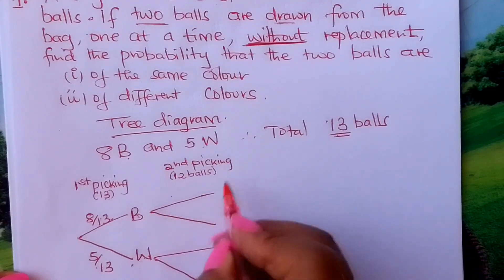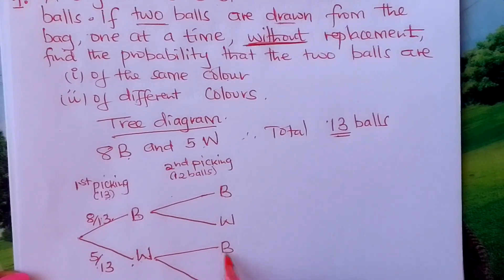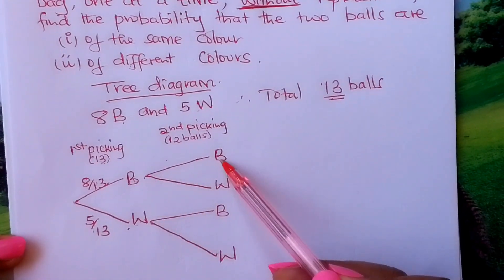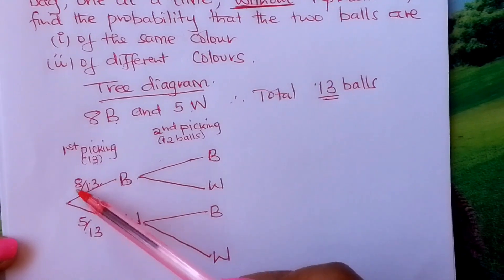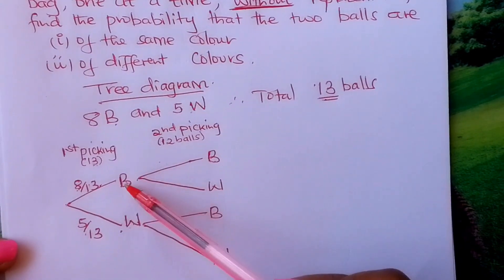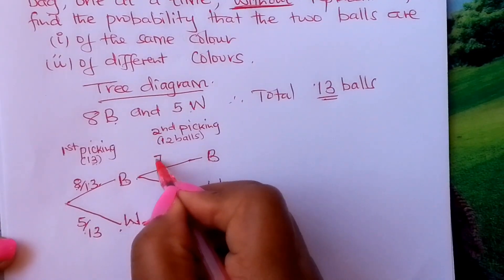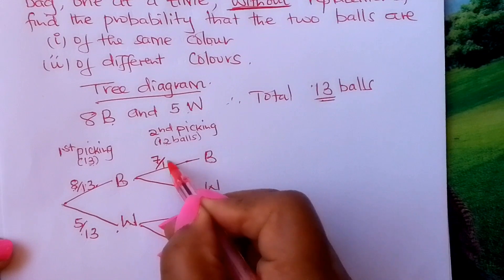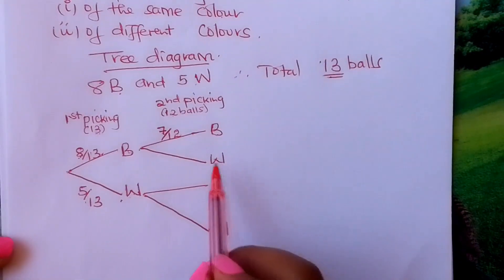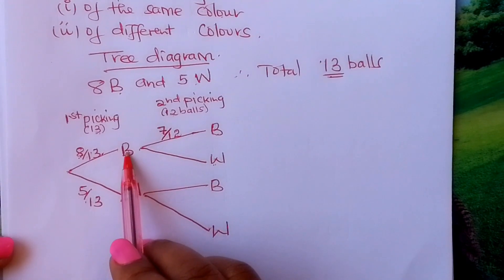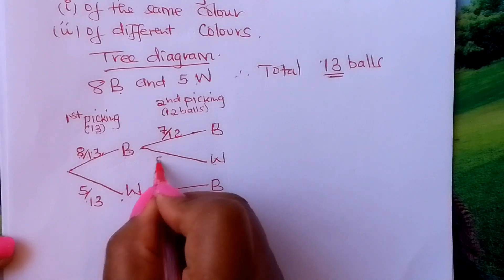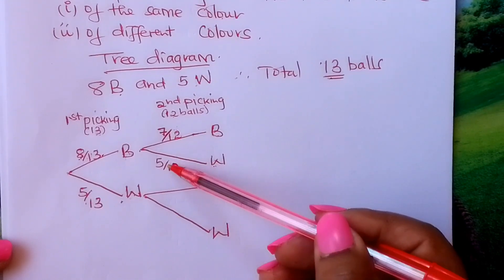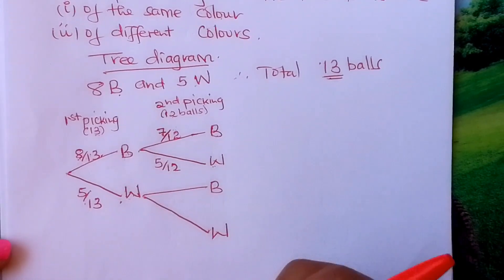From the black branch, we write B and W for the second picking. If you had picked a black ball first, there were eight black balls, so now there are seven black balls out of twelve. For the white balls, you had not picked any white, so there are still five white balls out of twelve. These two fractions add up to twelve over twelve, which is one.